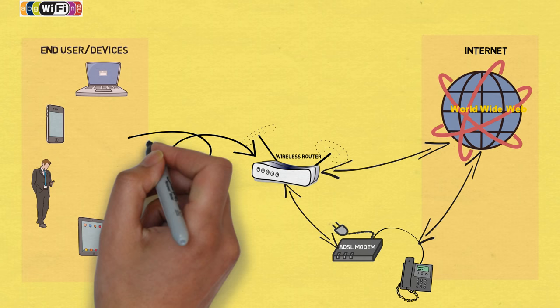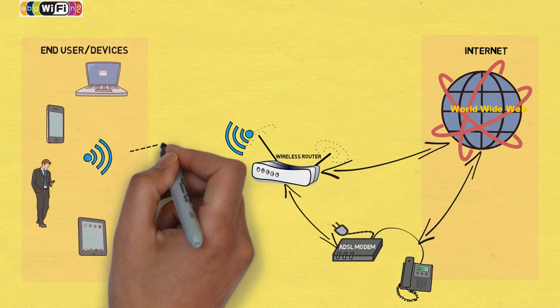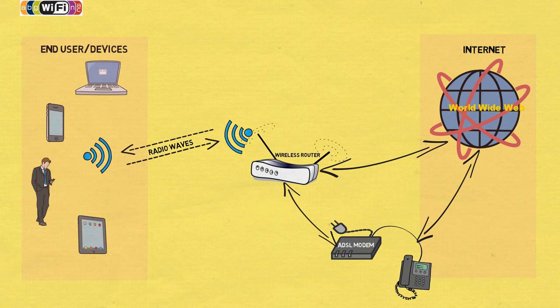The Wi-Fi router then connects to end devices via radio waves to establish an end-to-end internet connection. The wireless router receives data from the internet, translates it into radio signals, and sends it over the wireless network to the connected devices.